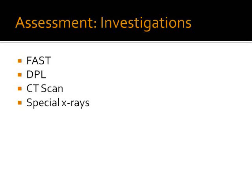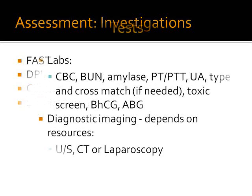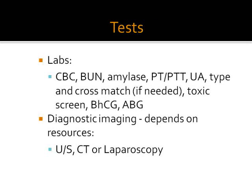Diagnostic peritoneal lavage is the next, and CT scan — these are especially important in blunt trauma when the need for laparotomy is still being considered. You can also order special tests like barium meal, barium swallow, and blood tests: complete blood count, urea electrolytes, serum amylase, coagulation screen, grouping and cross match, and any other indicated tests. Sometimes, when available, we can do laparoscopy to evaluate any injuries further.